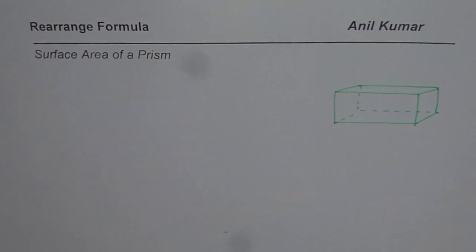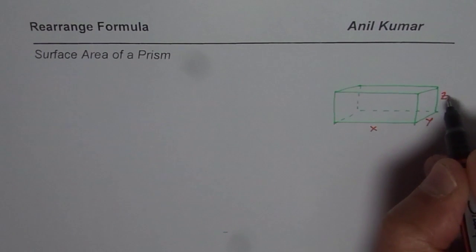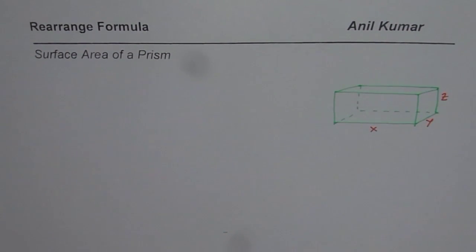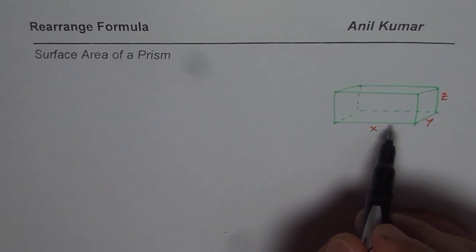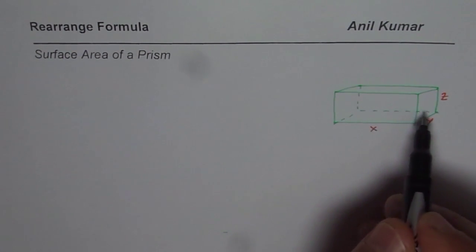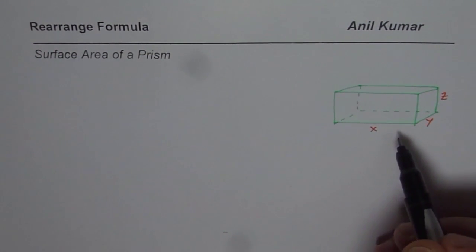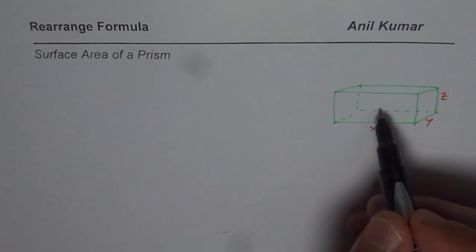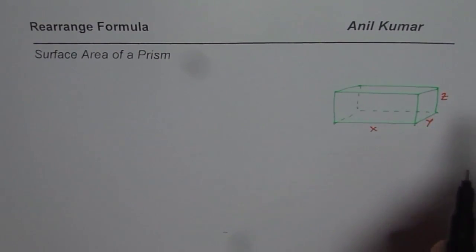The dimensions of this prism are X, Y, and Z, where Z is the height. What we really want to do is figure out how the surface area is related to either of the sides. A rectangular prism has 6 surfaces — two of each kind: front and back are the same, top and bottom are the same, and the two sides.